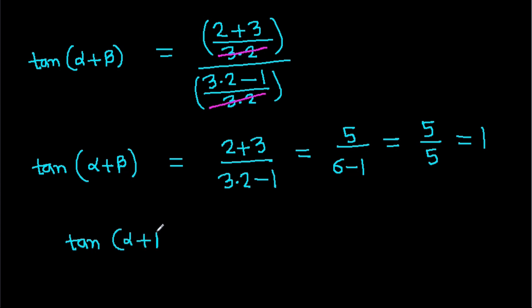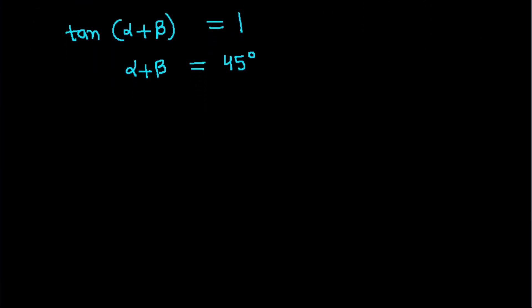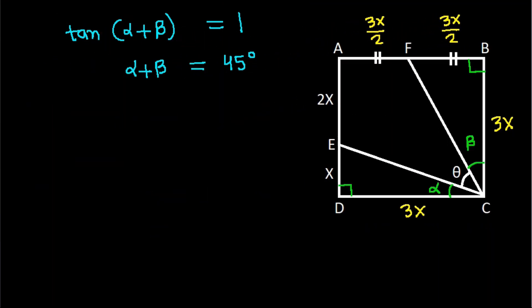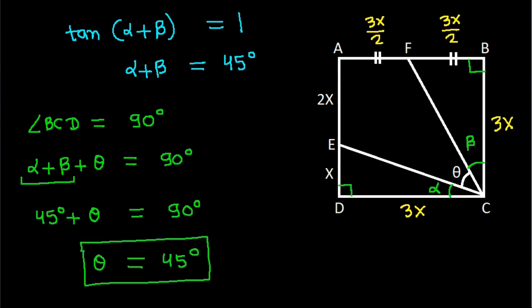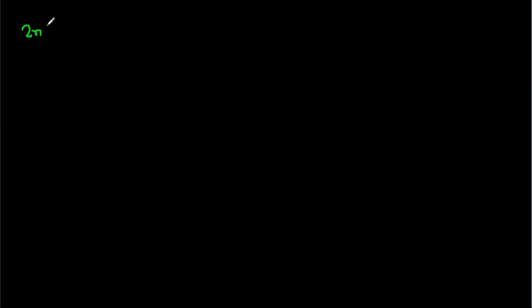Since tan(alpha + beta) equals 1, alpha plus beta equals 45 degrees. Now angle BCD equals 90 degrees, and angle BCD equals alpha plus beta plus theta equals 90 degrees. So theta equals 90 minus 45, giving theta equals 45 degrees. Now for the second method without trigonometry.